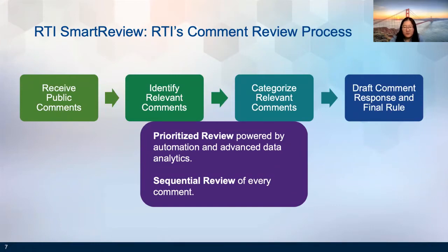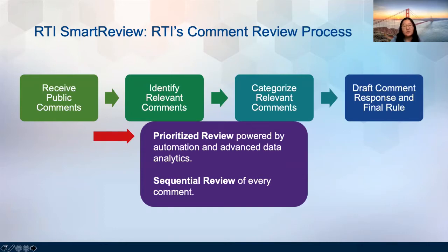This slide presents a high-level overview of our comment review process. We use two parallel review processes to identify relevant comments. First, we prioritize likely relevant comments for review and rapid transfer to the government. We also ensure all relevant comments are identified through the sequential review of every comment submitted, to balance efficiency with thoroughness. After relevant comments are identified, we categorize them based on topic areas, draft comment summary documents, and provide support for briefing and other documents if needed. Today's presentation will focus on the prioritized review process.